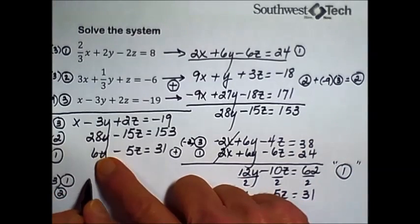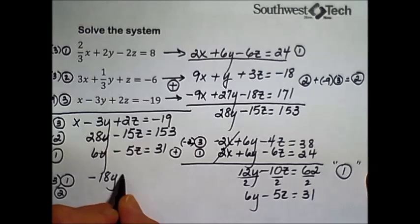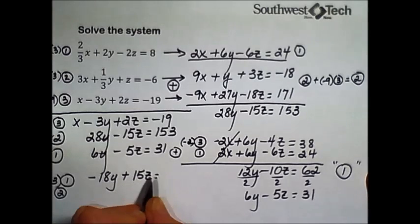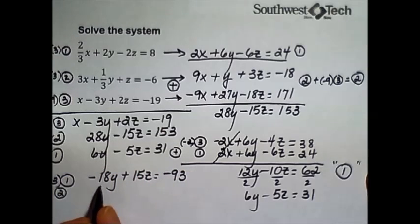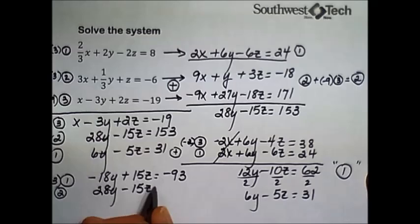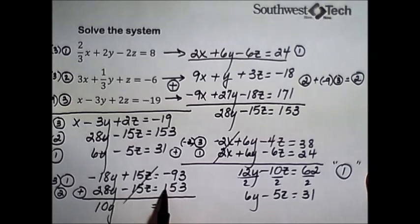So equation number one, every term multiplied by negative three gives us negative 18y, positive 15z, and negative 93. Equation number two, I didn't do anything with. And if we've done this correctly, adding these together, we end up with a positive 10y, the z's are gone, they cancel out. Negative 93 plus 153 leaves us with 60.